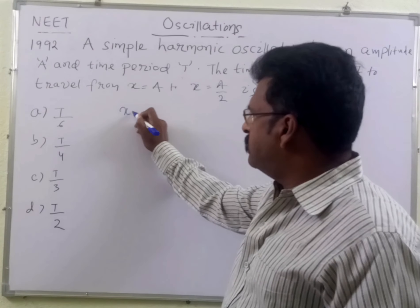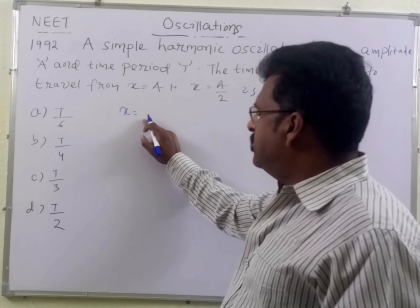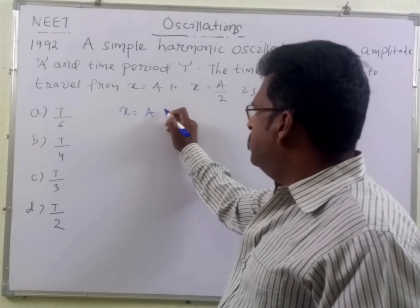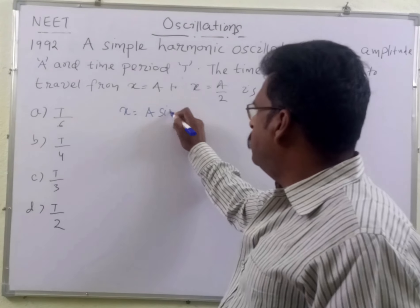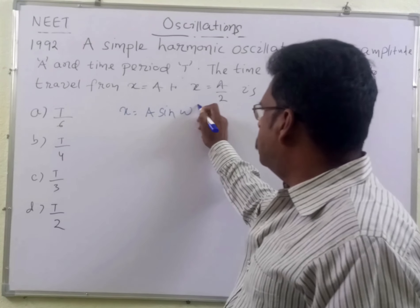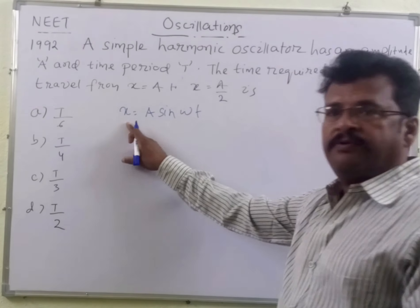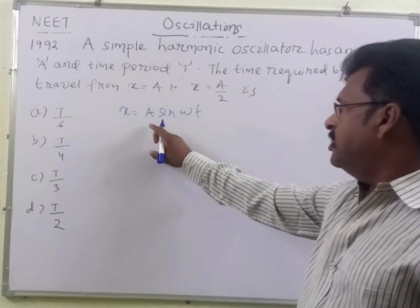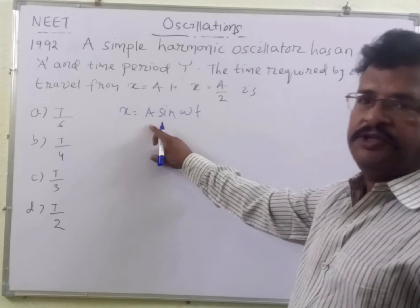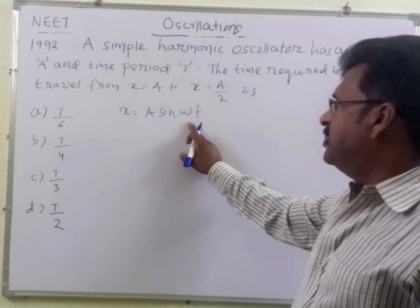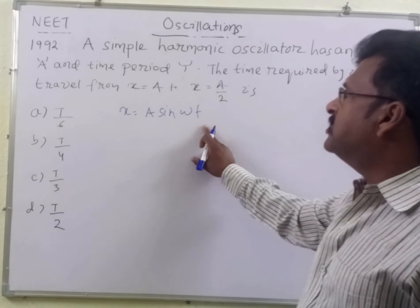What is the equation of motion, students? That is, X is equal to A sin omega T, where X is the displacement from the mean position, A is the amplitude, omega is the angular frequency, and T is time.